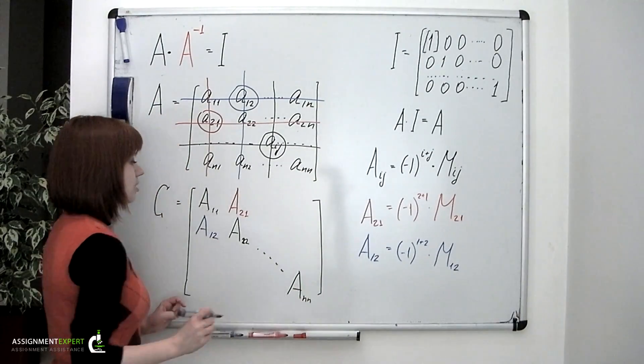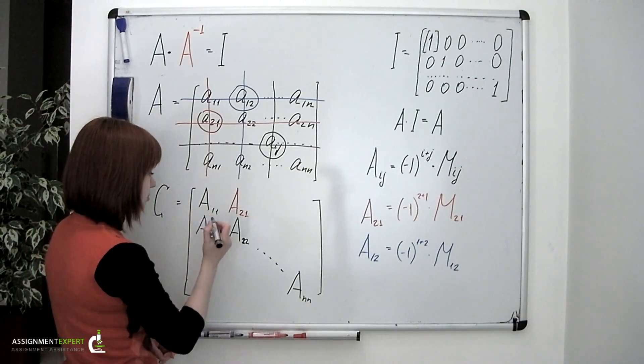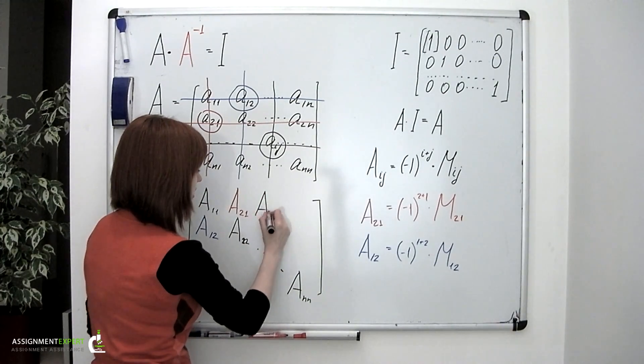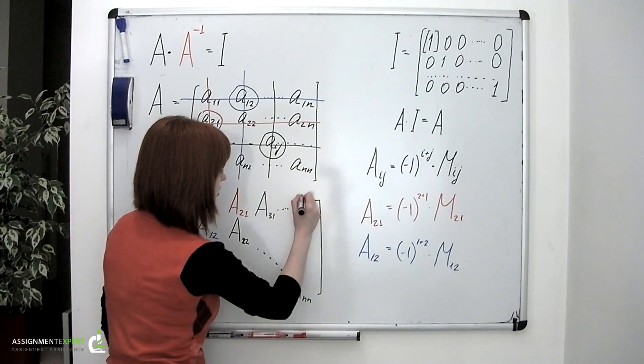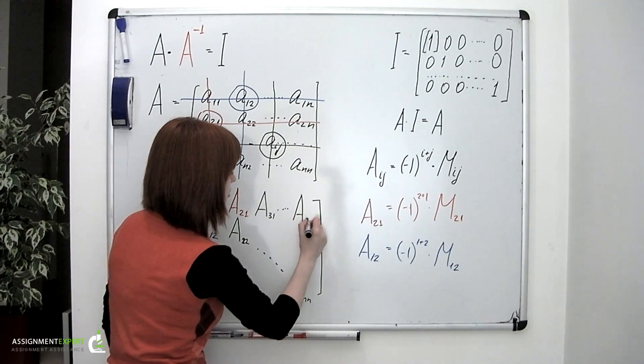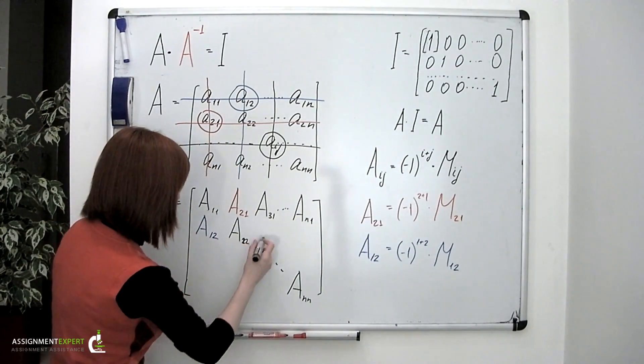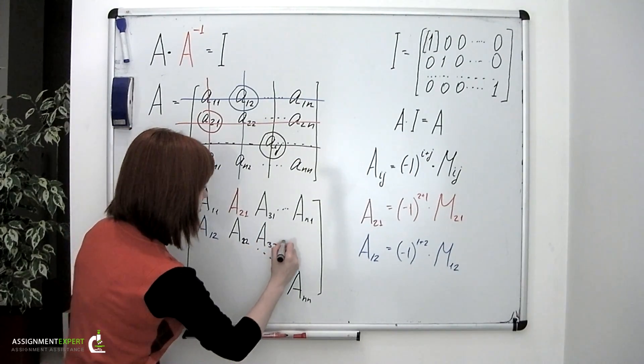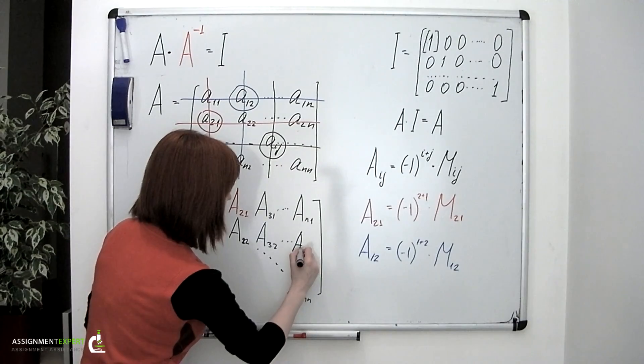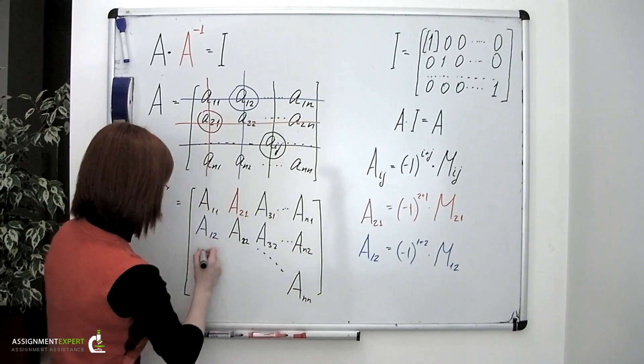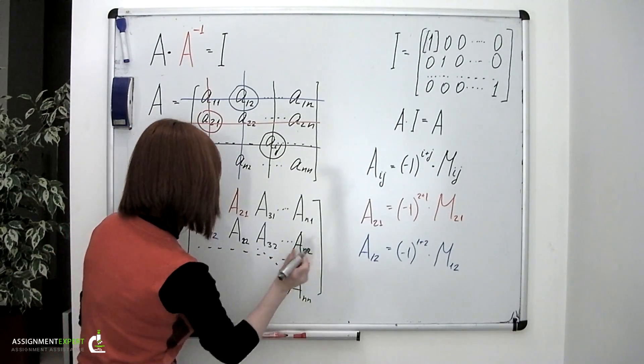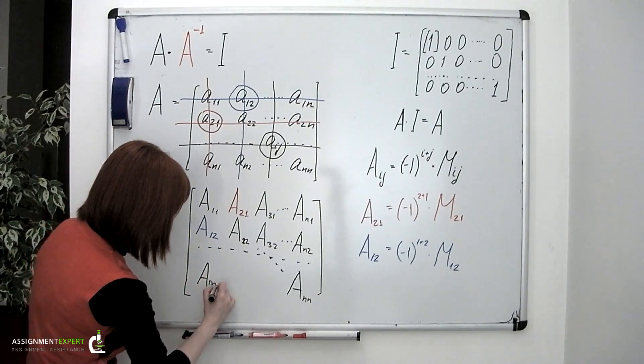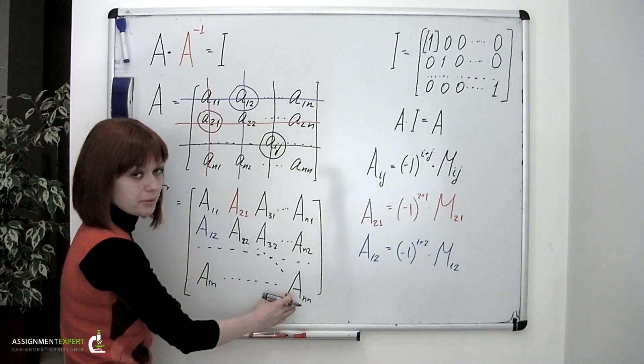So I'm filling my adjugate matrix up. Here I have A_31, A_n1, and then I have A_32, A_n2, and then finally I have A_1n and A_nn.